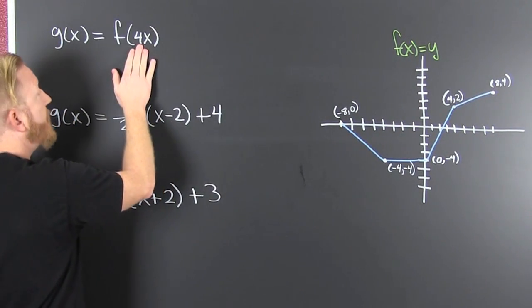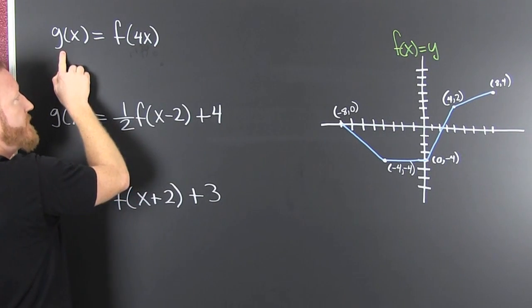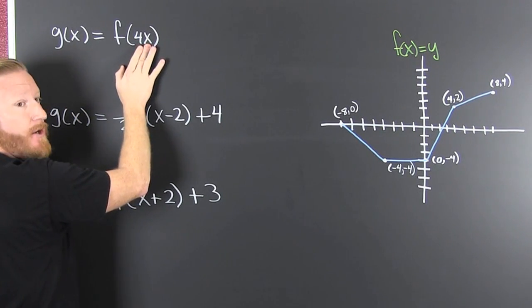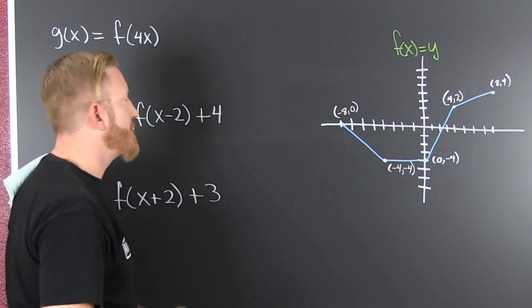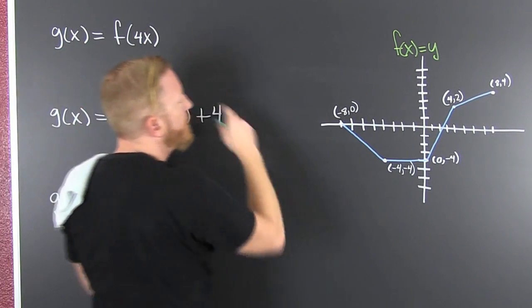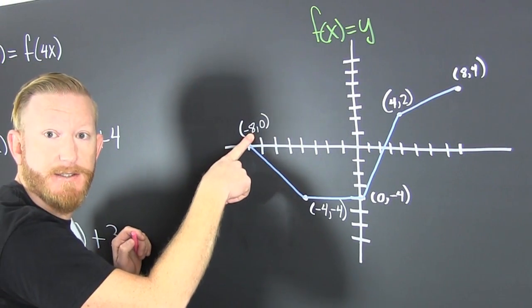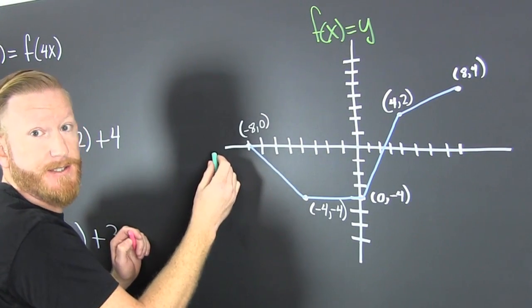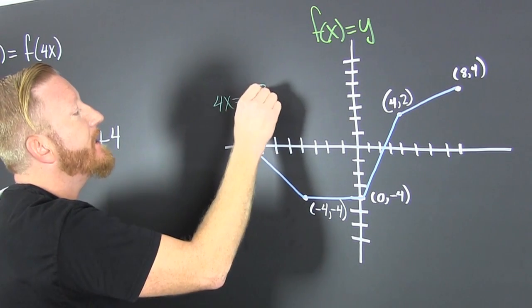First, let's just look at the x's. That means I'm going to take my new function g of x. It's going to have four times whatever x was. That doesn't do what you think it does. That's a shrink. We're taking all of our x's and 4x is our new x.